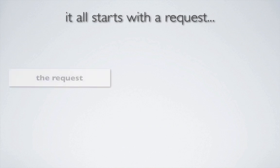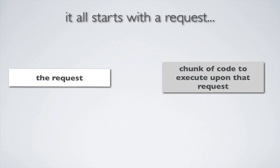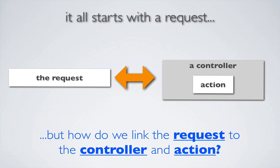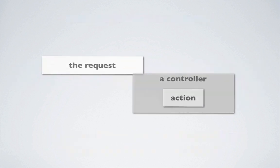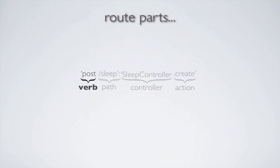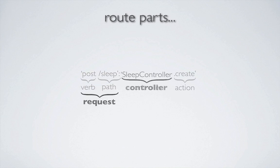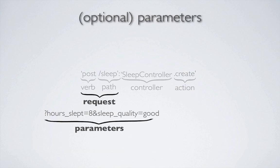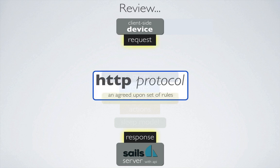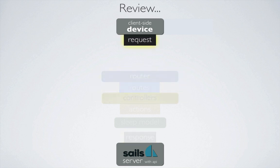By making the HTTP request to a server, we're indicating that some bit of code should be executed on the server. That chunk of code is known as an action, and these actions can be grouped together into a controller. But how do we link the request to the controller and action? That's where routes come in. Routes are the instructions that tie the request to the controller and ultimately to the action. From our earlier example, the route consists of the verb POST, the path /sleep, which forms the request and pairs it with the sleep controller and the create action. Parameters can also be part of the request and can pass information to the action.